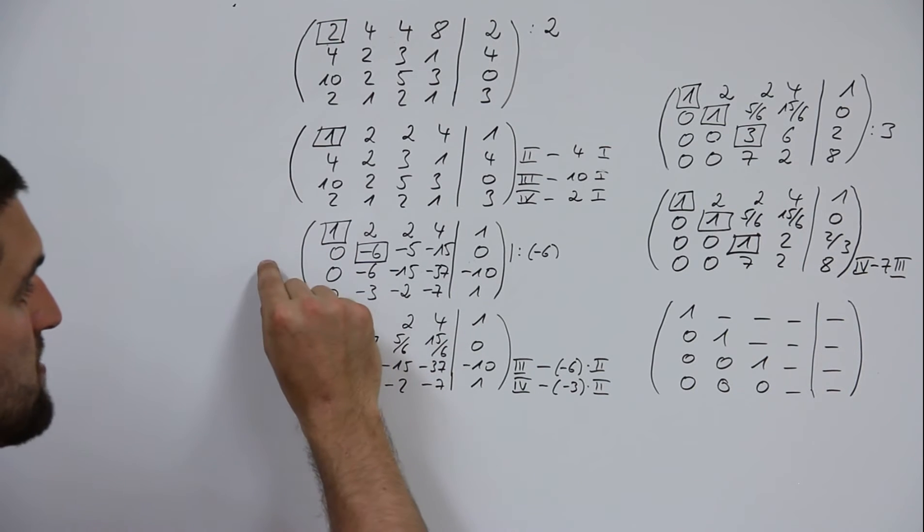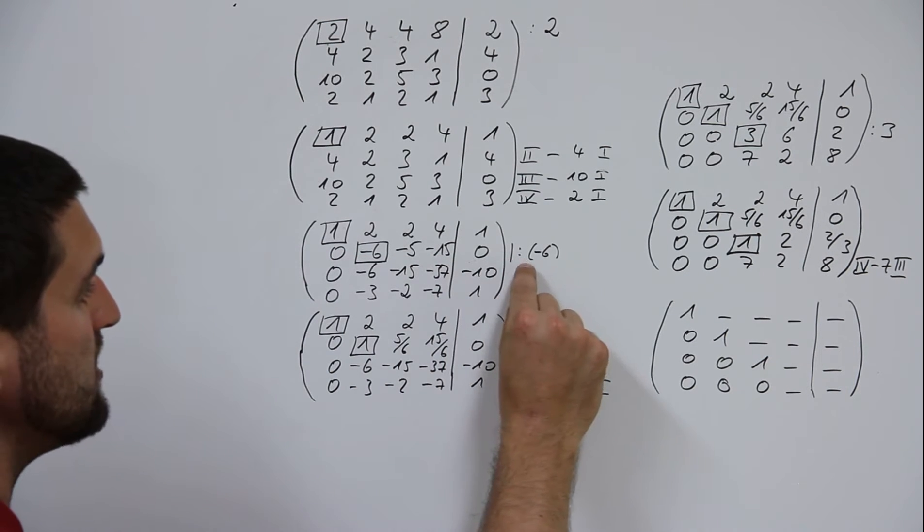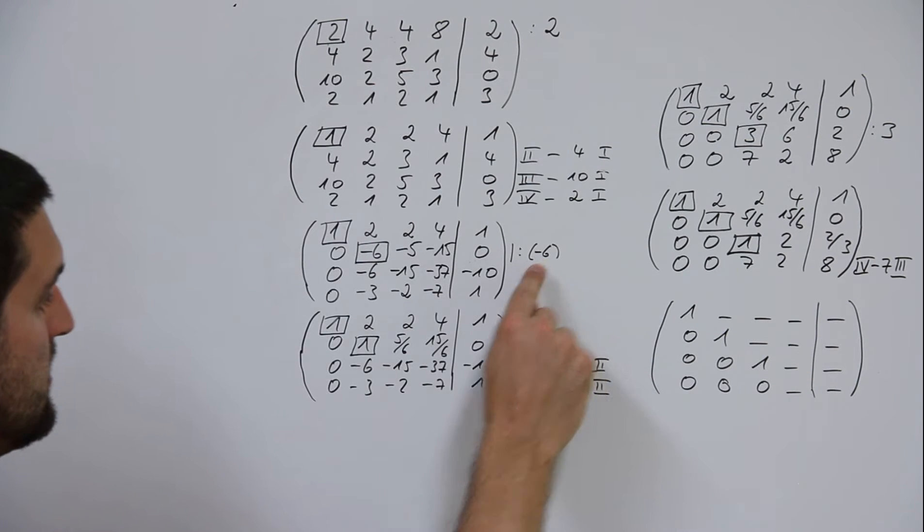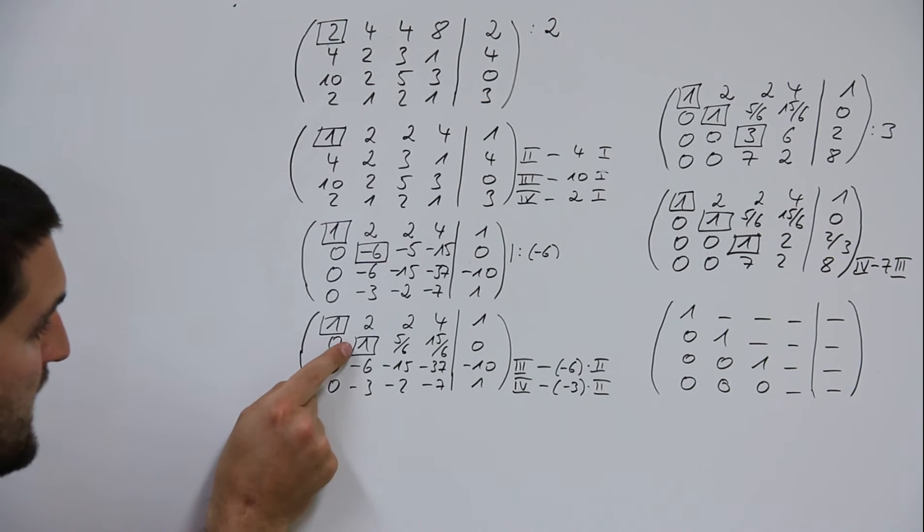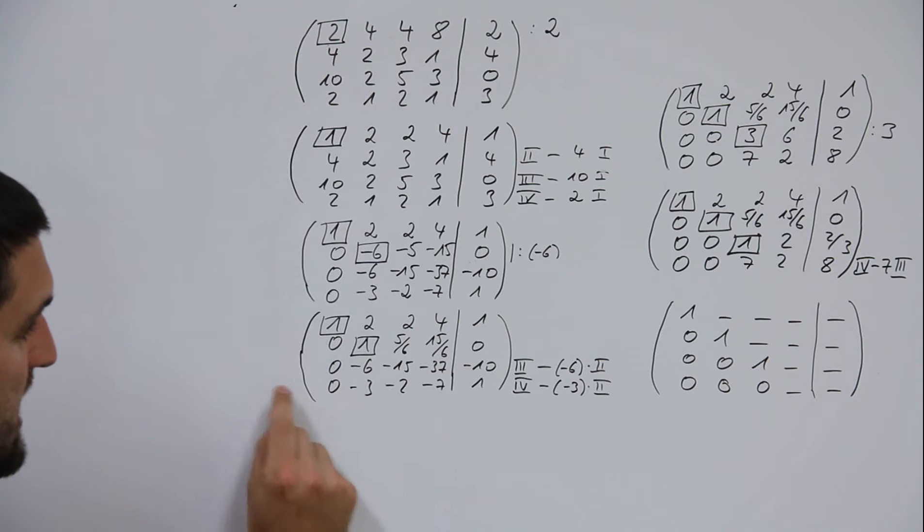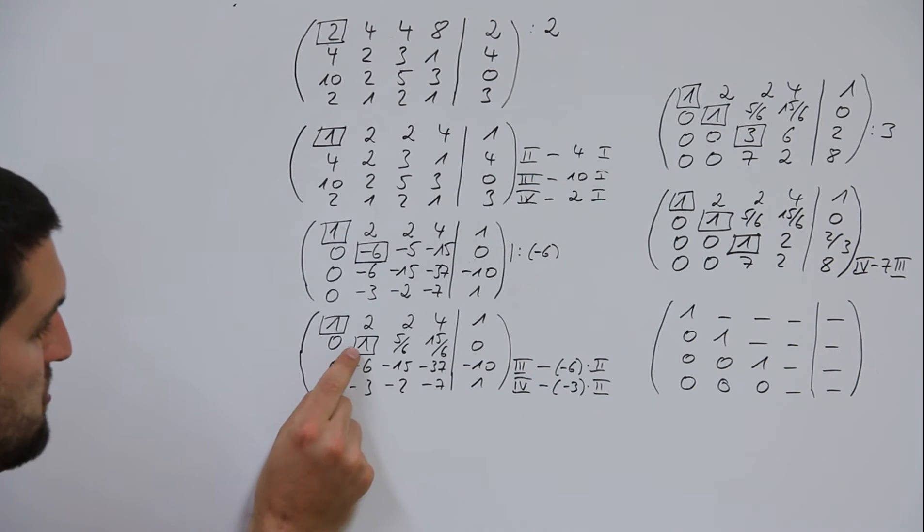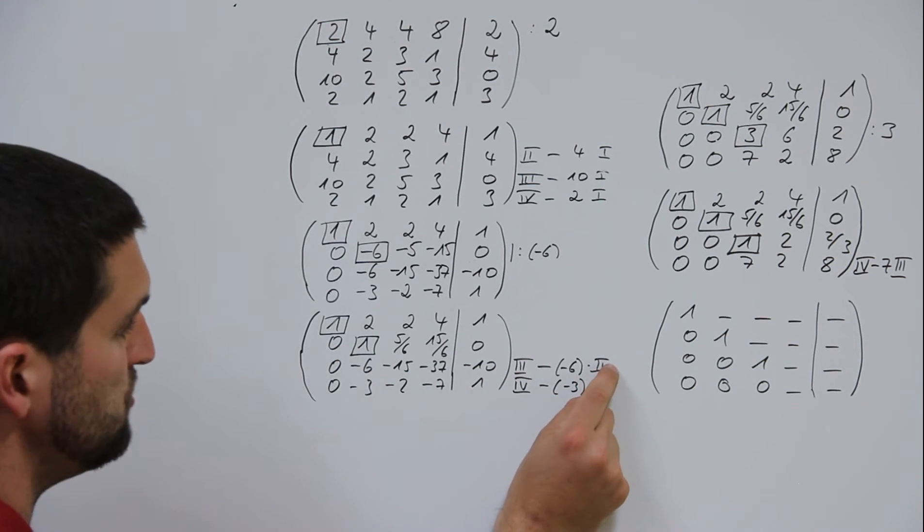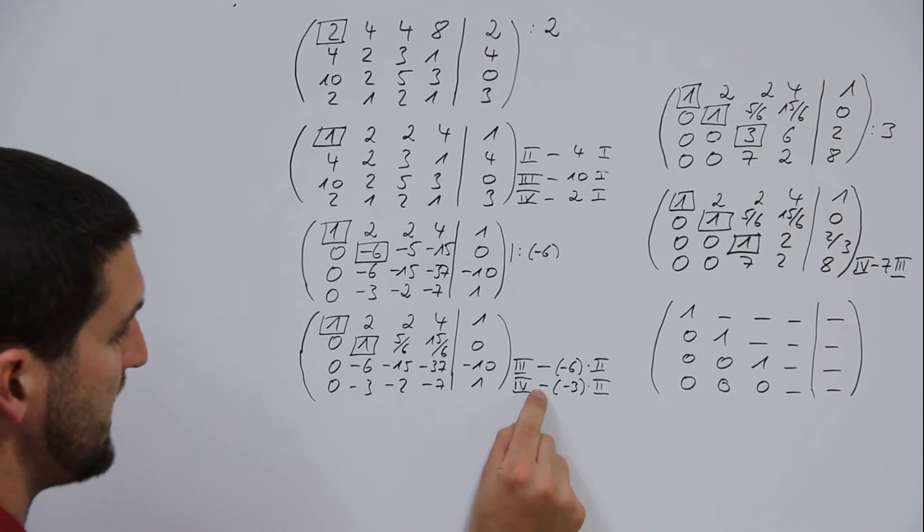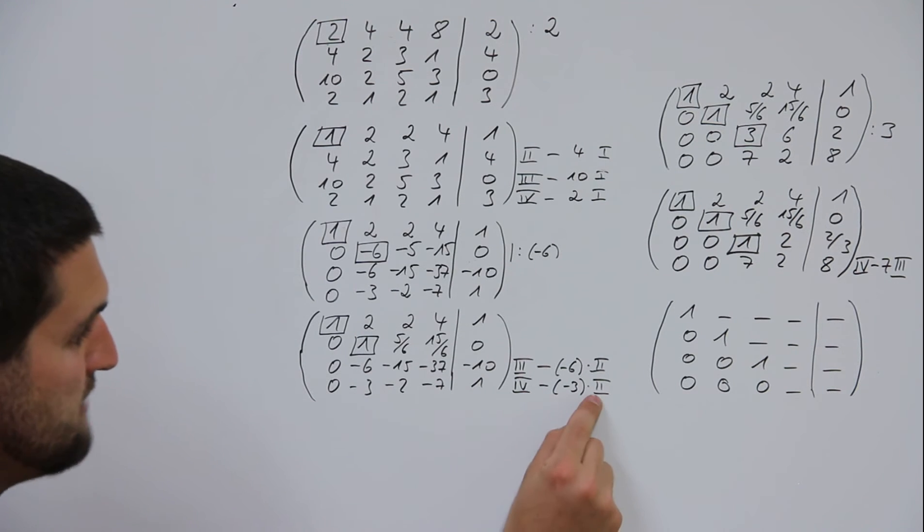Divide the whole second line through the new pivot element. New pivot element again 1. The next steps, line 3 minus whatever stands here under the new pivot element times 2. Line 4 minus whatever stands here times 2.